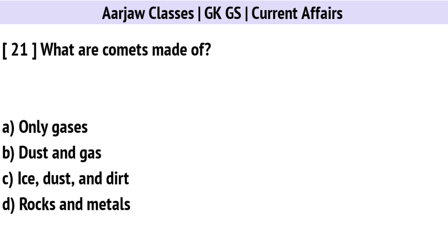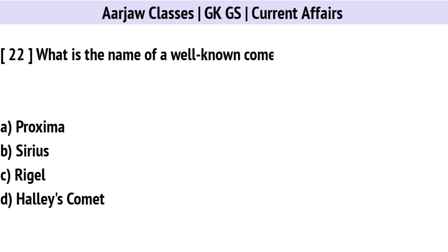What are comets made of? The right option is C: Ice, dust, and dirt.